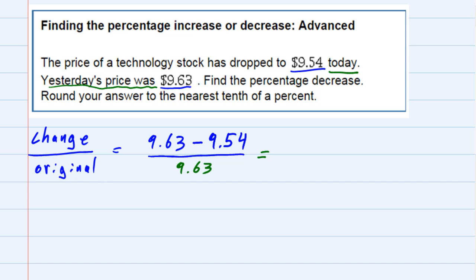So, simplifying the numerator, if we go ahead and do that subtraction, that $9.63 minus $9.54 gives us $0.09. And then we're dividing by that original $9.63. So,